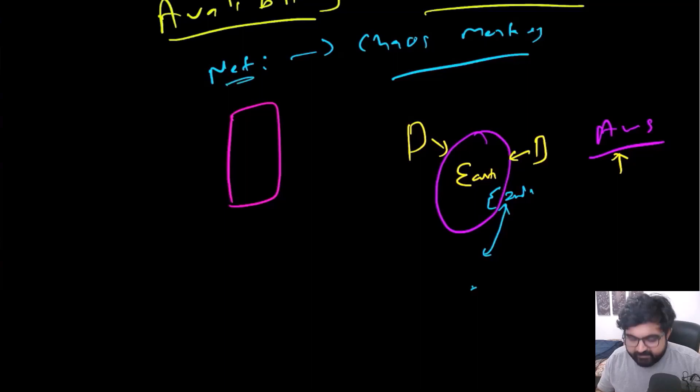So Netflix, they already have a system in place where if something like this happens, they are going to have the other two servers be capable enough to keep on showing Netflix without any issues. And this is the best definition of availability.